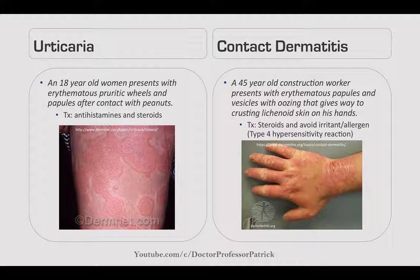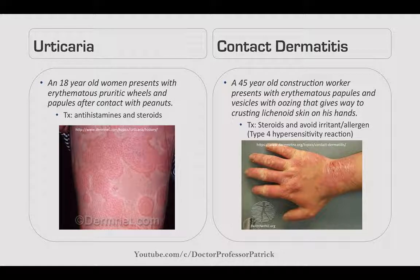Urticaria: an 18-year-old woman presents with erythematous pruritic wheals and papules after contact with peanuts. Treat with antihistamines and steroids. Contact dermatitis: a 45-year-old construction worker presents with erythematous papules and vesicles with oozing that gives way to crusting lichenoid skin on his hands. Treat with steroids and avoidance of any irritant or allergen. It's usually a type 4 hypersensitivity reaction, often due to chromium in cement.